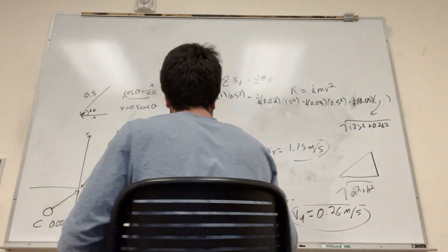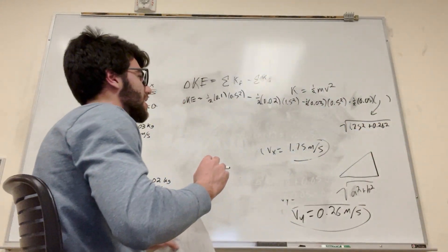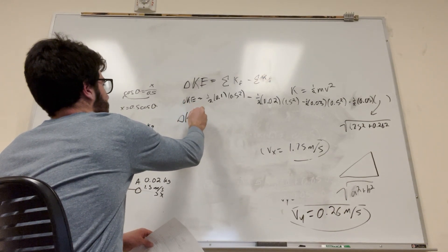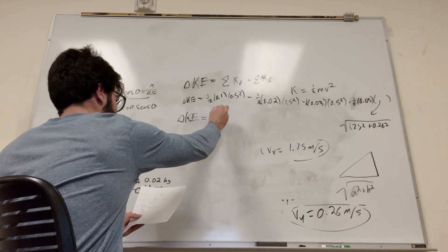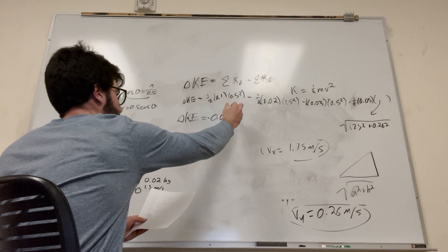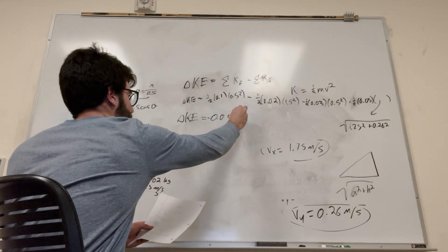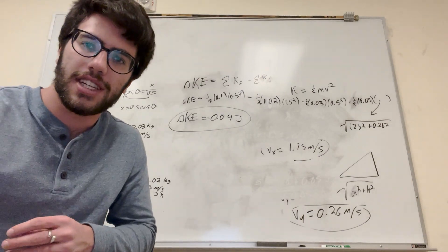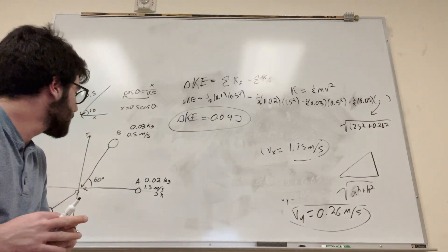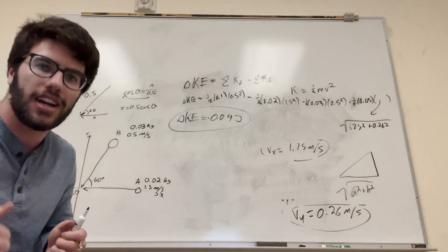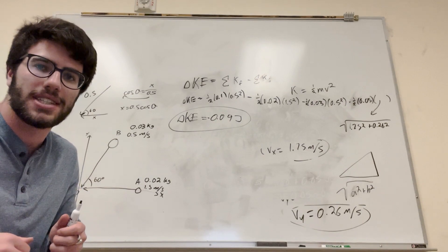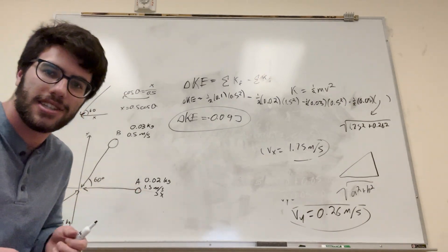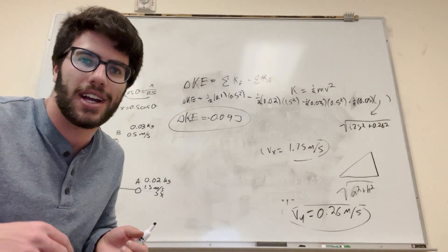If you solve all these — just plug the numbers into your calculator — you're going to get the change in kinetic energy is equal to negative 0.09 joules. That's how you solve this kind of problem. Basically, you just have to look at it in components, break it down into the simplest forms, and that's how you get these answers. Good luck on your physics homework!